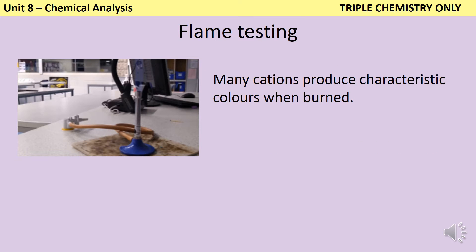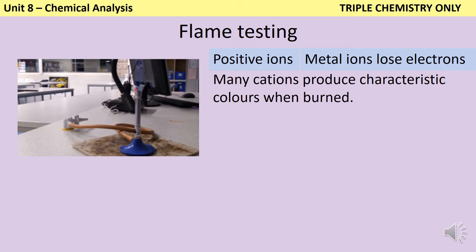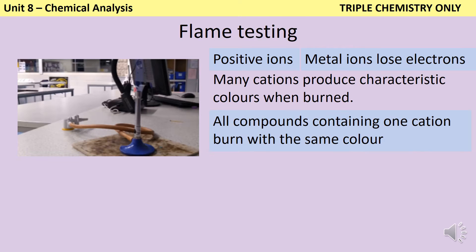The AQA specification says that many cations produce characteristic colours when burned. A cation is a positive ion, and these are formed when metal atoms lose electrons. When we say that they produce a characteristic colour, that means that if I take any compound that contains a particular cation and I burn it, I will see the same coloured flame.